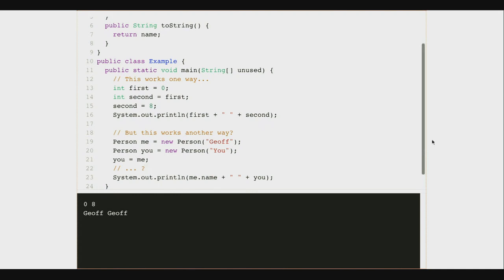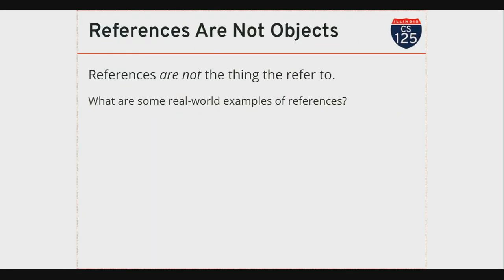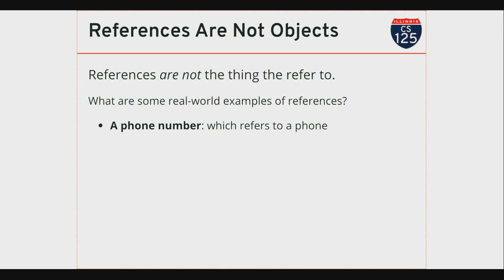Let's go through some real-world analogies — references are one of the places where we actually have some good real-world analogs. A phone number. References are not the thing they refer to — references allow you to refer to something, but they're not the thing itself. A phone number refers to a phone. I've got a phone over there; I have a number; I could write that number down and give it to you. Then you have a reference to my phone, which you can use to call it. The phone number is not the phone. If I create ten more references — write my phone number down ten more times — I don't have ten phones. I have one phone. The phone number is a reference; the phone is the thing that's referred to.